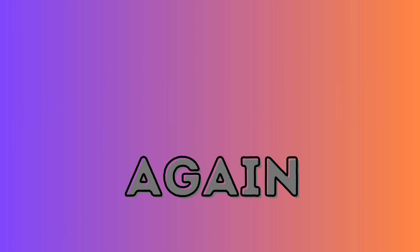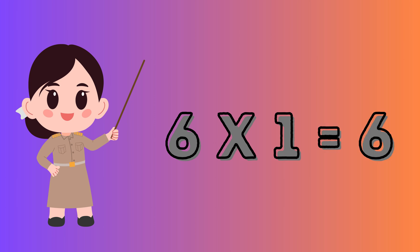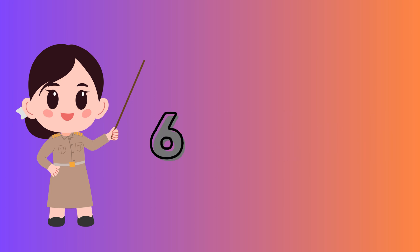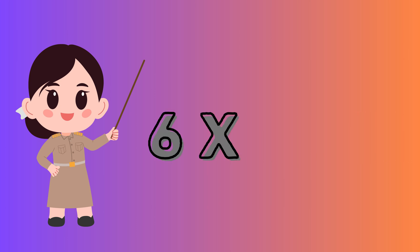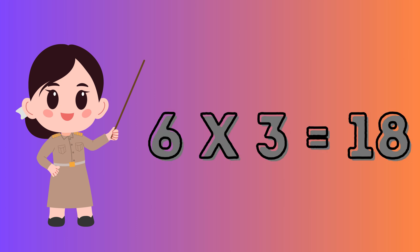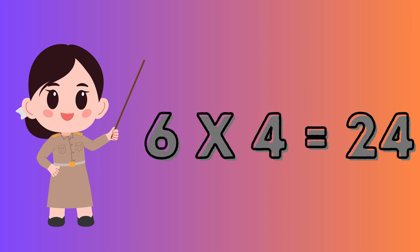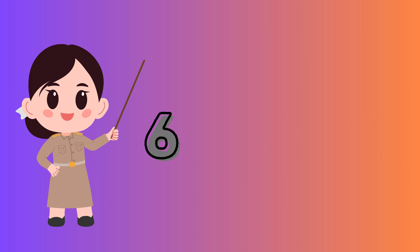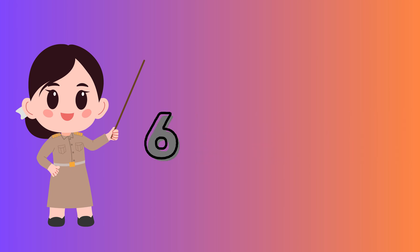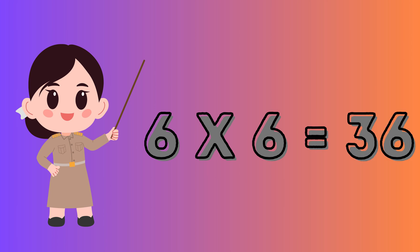Let's repeat again. 6 1's are 6. 6 2's are 12. 6 3's are 18. 6 4's are 24. 6 5's are 30. 6 6's are 36.